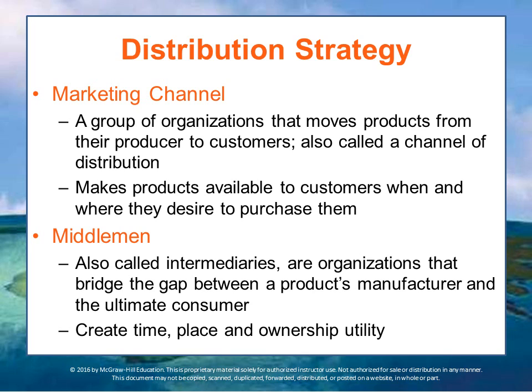Organizations that bridge the gap between a product's manufacturer and the ultimate consumer are called middlemen or intermediaries. They create time, place, and ownership utility. Examples include manufacturer's representatives, who work with many manufacturers to place those manufacturers' products in various outlets, as well as retailers, wholesalers, and distributors.